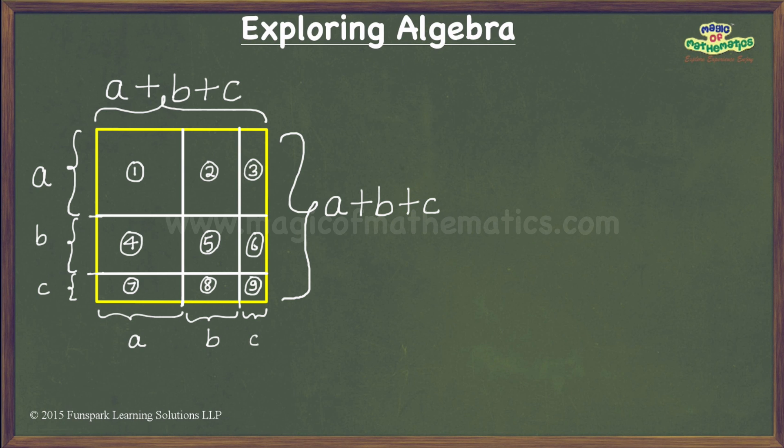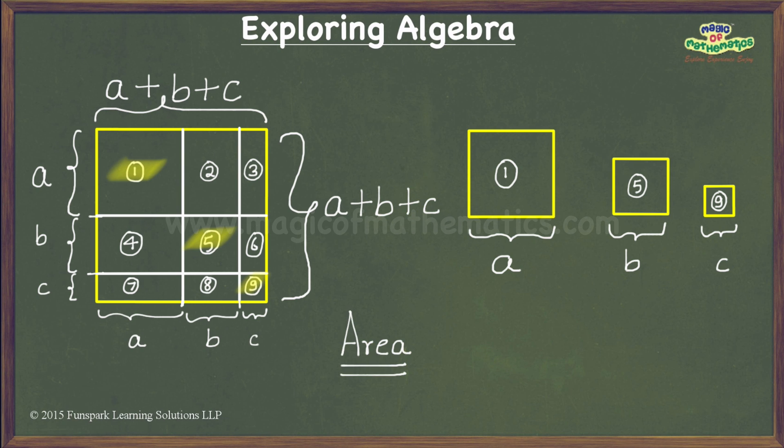Pieces numbered 1, 5 and 9 are squares of dimensions a units, b units and c units respectively. Hence, their areas are a², b² and c² square units respectively.